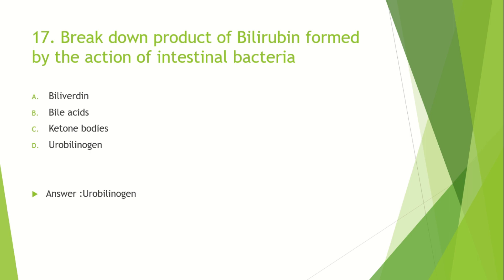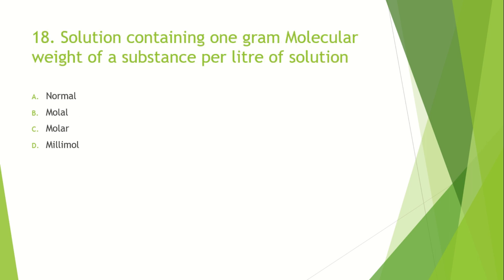Solution containing 1 gram molecular weight of a substance per liter of solution: Option A: Normal. Option B: Molar. Option C: Millimole. The answer is Molar. Normal means 1 gram equivalent weight per liter of solution. Molal means 1 gram molecular weight per kilogram of solution. We use millimoles for smaller quantities.